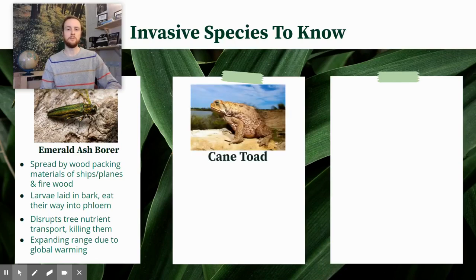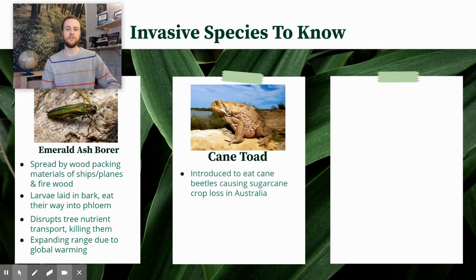Another great example of an invasive species that we need to know for AP Environmental is the cane toad. There's a great movie about the cane toad — it's kind of become a cult classic. It was introduced in Australia to control cane beetles that were eating the sugarcane crop there.